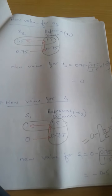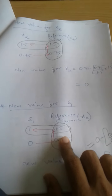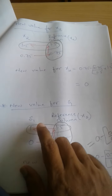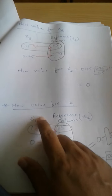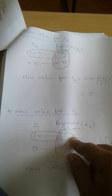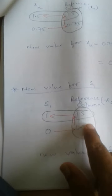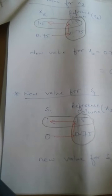In the previous video we were calculating the new value for S1. When calculating the new value for S1 we have to consider the S1 column of the previous table as well as the reference column. Going back to the previous page, we considered S1 values 1 and 0, and reference column values 1.5 and 0.75.